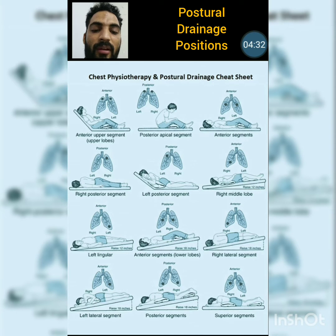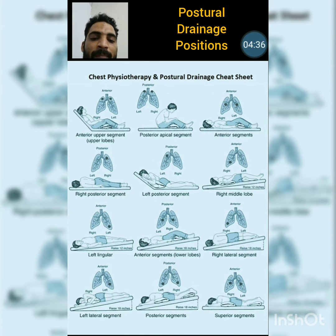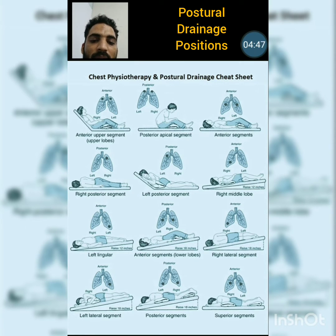The next position is for the right lateral segment. The bed raise from the legs will be approximately 18 inches. The therapist provides percussion on the right side of the lungs, just around the lower anterior angle of the scapula.